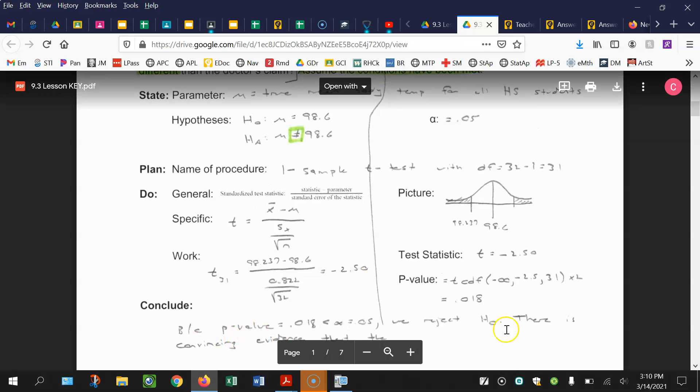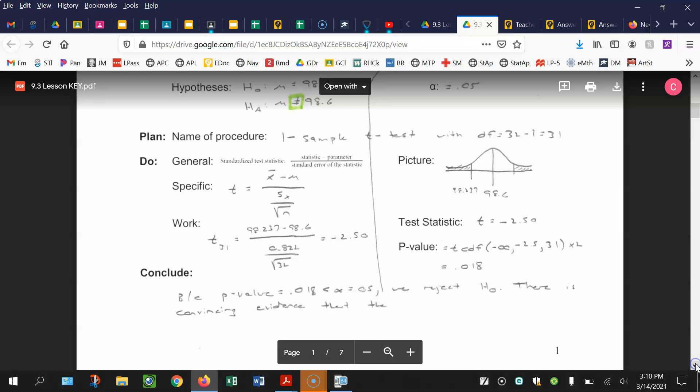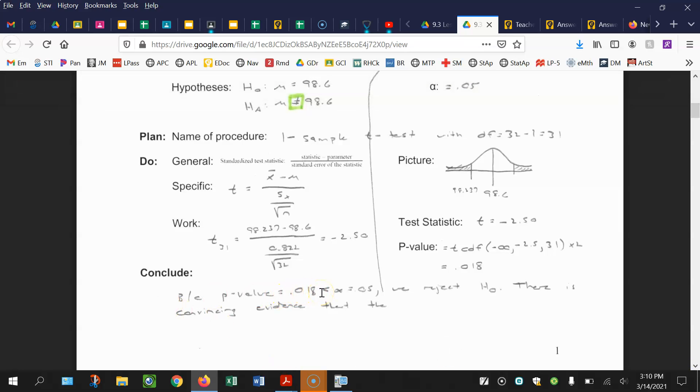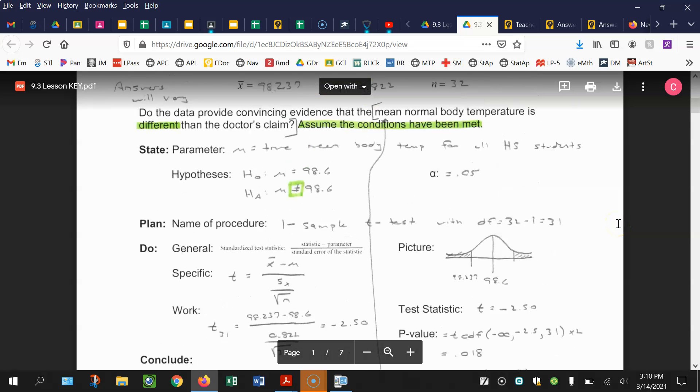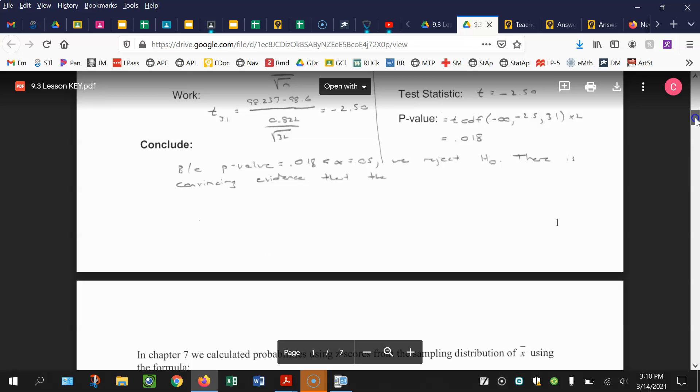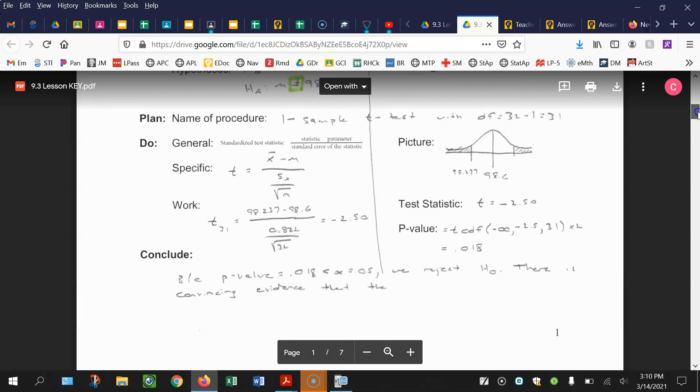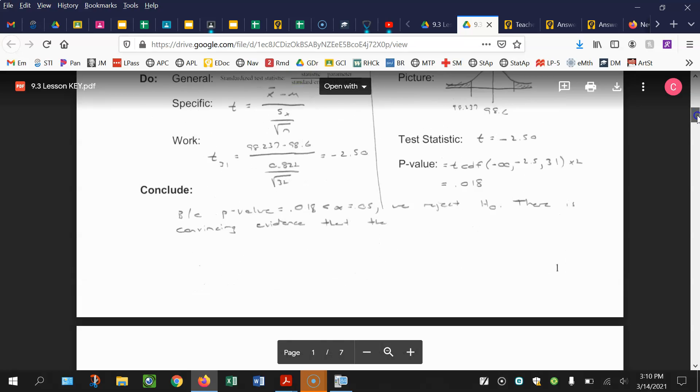Conclusion: because the p-value equals 0.018 is less than alpha equals 0.05, we reject the null. There is convincing evidence that the true mean body temperature for all high school students is different than the doctor's claim or different than 98.6. More specifically, it looks like it's lower.